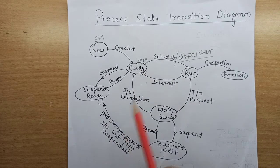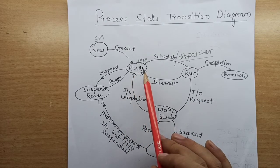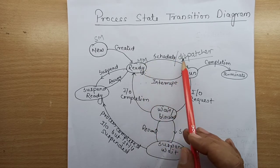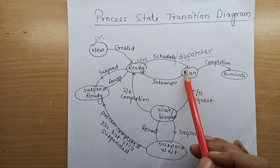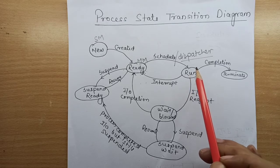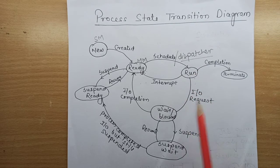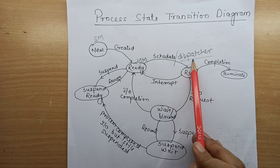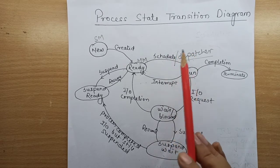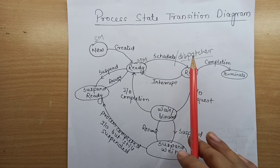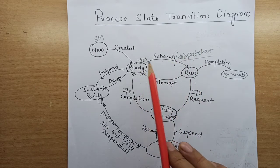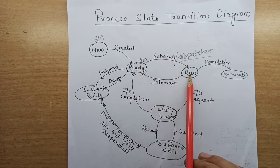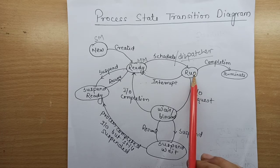Once a process is ready to be assigned to the processor, the scheduler will pick it and dispatch it to the CPU. When the process state is run state, it means the process is actually allocated to the CPU and executing on it. The scheduler and dispatcher are two programs — I will explain these in detail in the next video. Processes in the ready state are scheduled by the scheduler to the CPU.